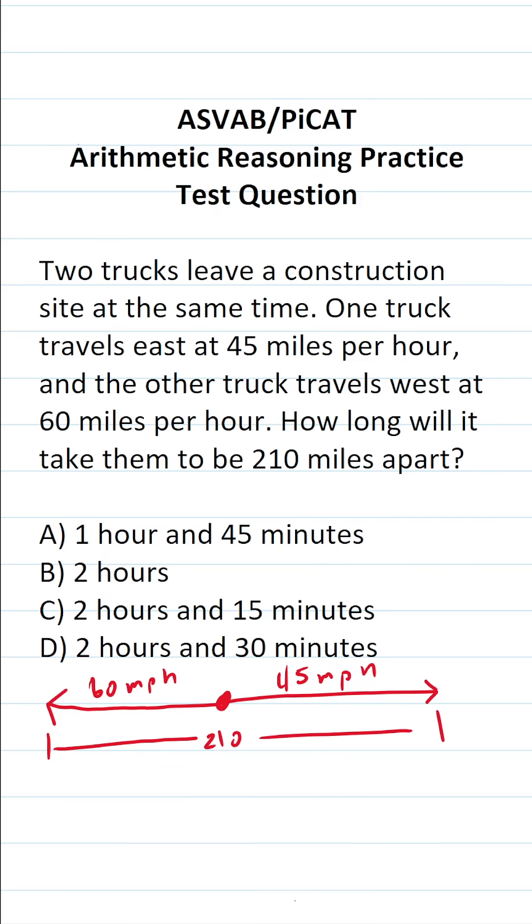So the easiest way to solve this one is to reframe the question. Let's say we had one truck traveling the same distance of 210 miles, albeit at a combined rate of 60 plus 45 miles per hour. 60 plus 45 is 105. That is, this other truck is going at a rate of 105 miles per hour.